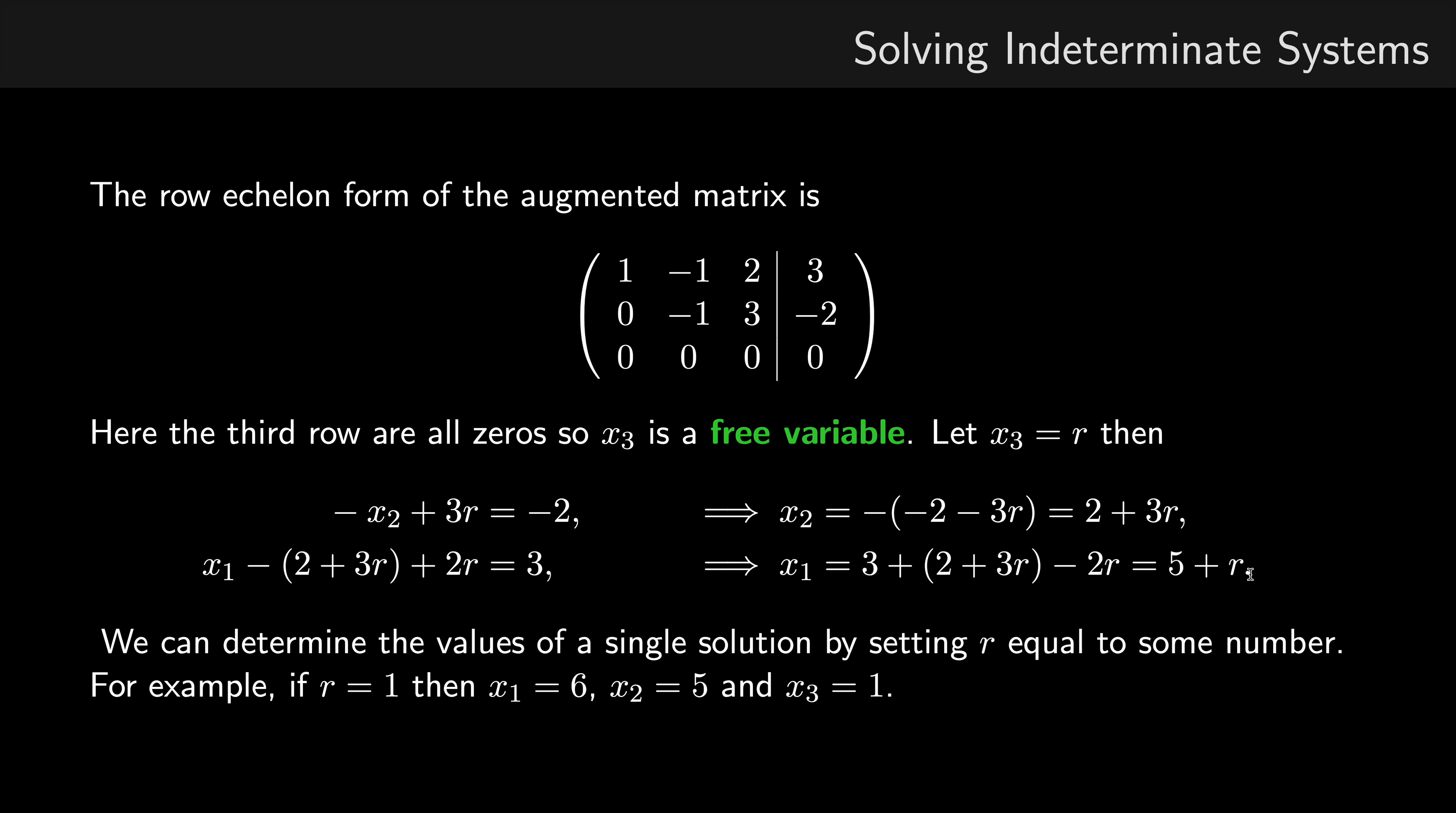Now if you want to obtain any solution to this, you just set r equal to some number. So for example, if r is equal to 1, then we know that 5 plus 1 equals x1, so x1 is equal to 6. For x2, we've got 2 plus 3, which is 5. And for x3, we of course let r equal 1, so x3 is equal to 1. So this is one such solution to that linear system.